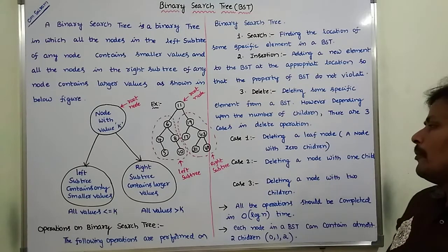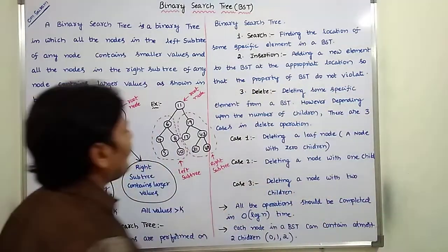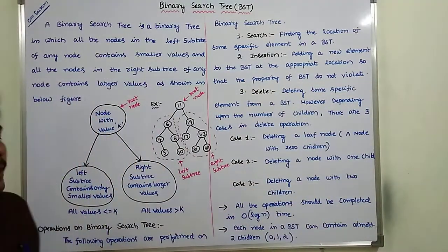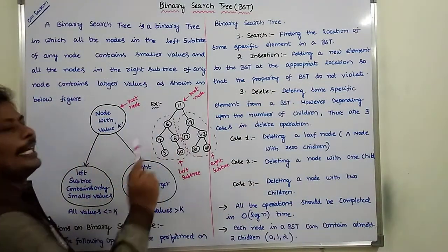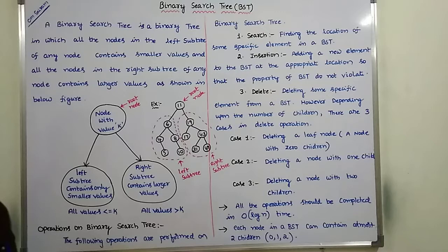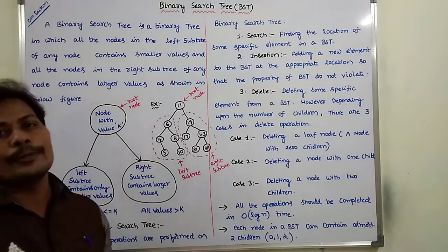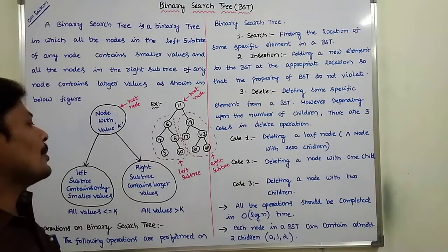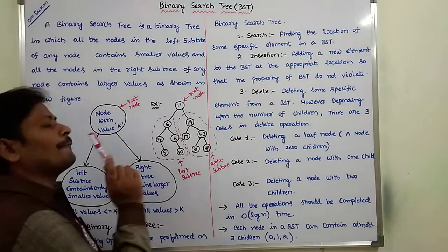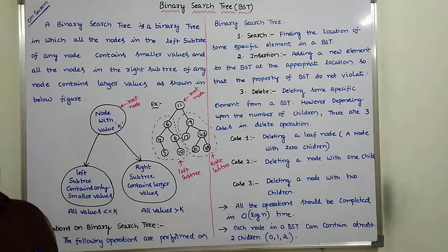For example, in the delete operation, suppose we want to delete node 10. The deleted node has no children, so this is a leaf node. Simply we have to delete that node.